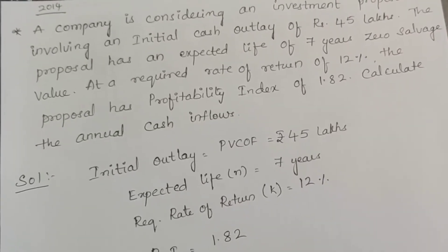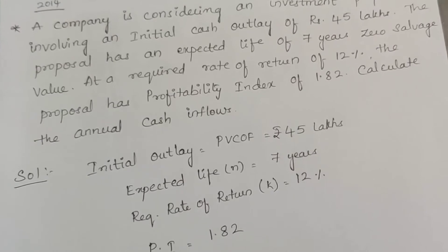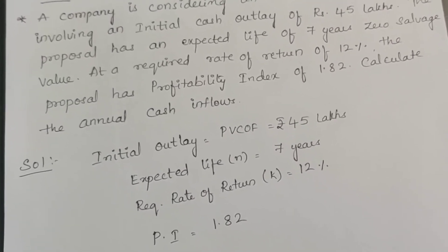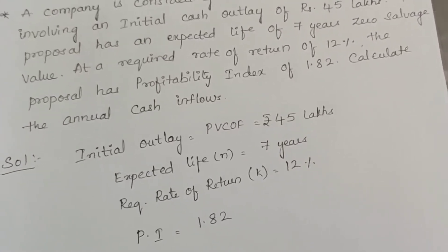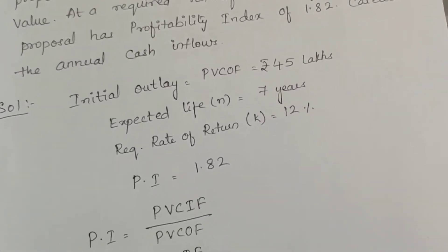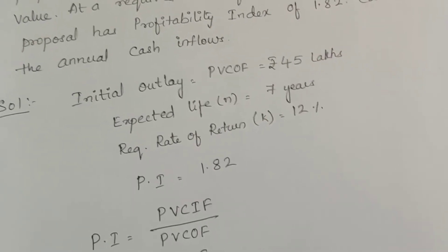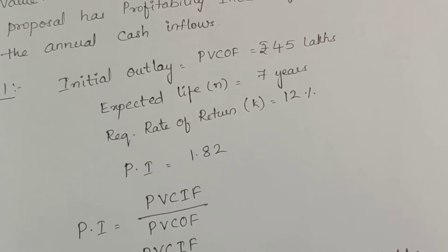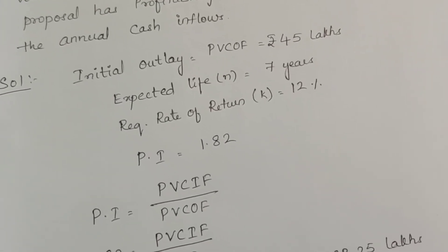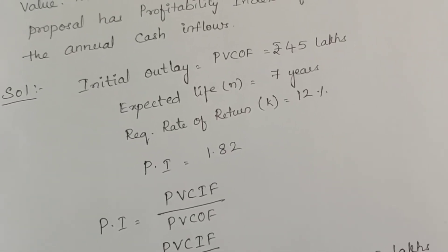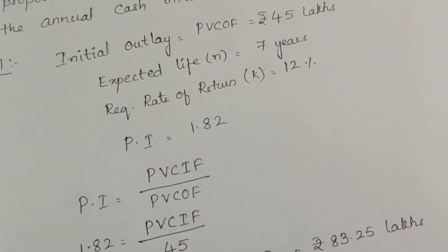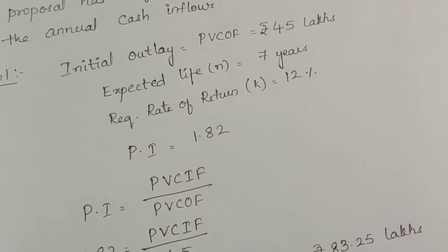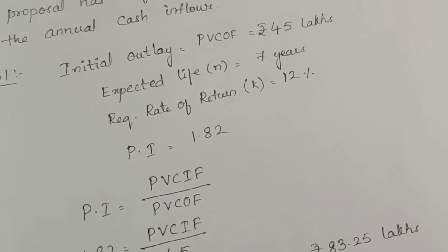It is a bit tricky. Using profitability index we have to calculate the annual cash inflows. The initial outlay provided is 45 lakhs. We will consider it as present value of cash outflow, the investment coming out of your pocket. The expected life N equals 7 years and required rate of return K equals 12 percent.